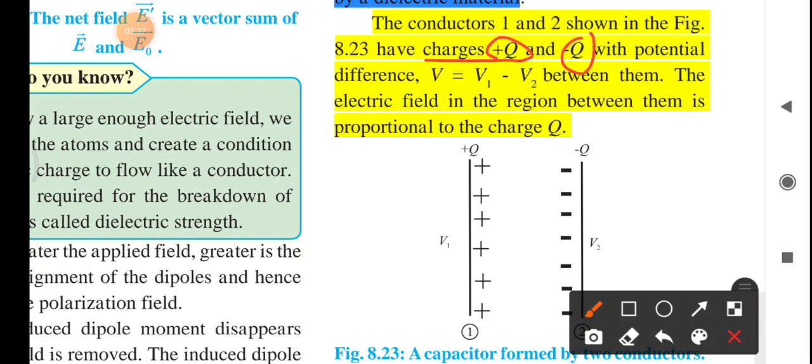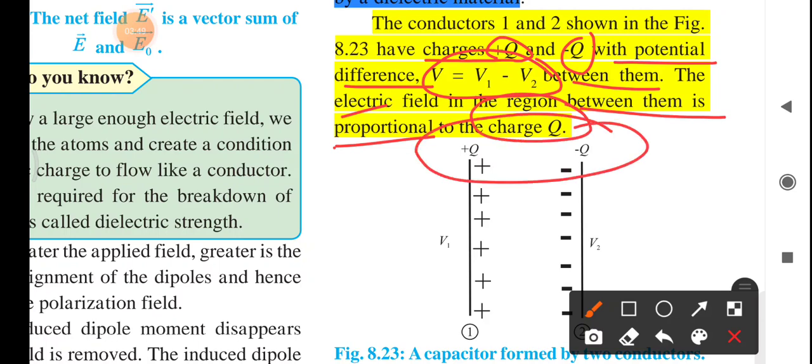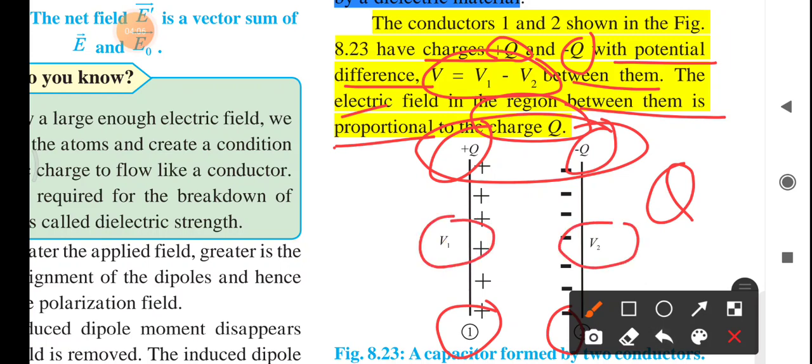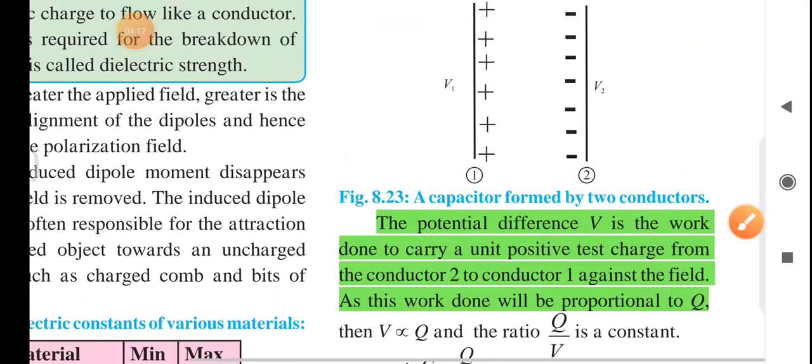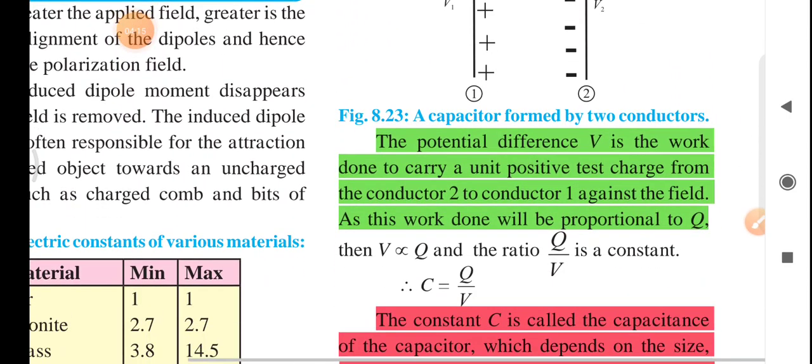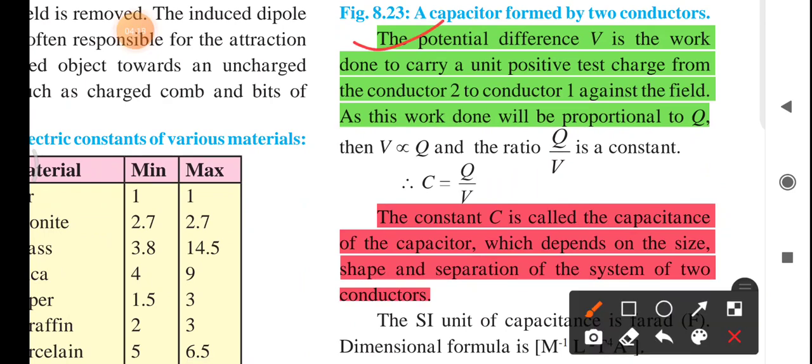The conductors 1 and 2, two conductors are there. Here we have conductor 1 and here we have conductor 2. Charges plus Q and minus Q with the potential difference V is equal to V1 minus V2 between them. The electric field in the region between them is proportional to charge Q.